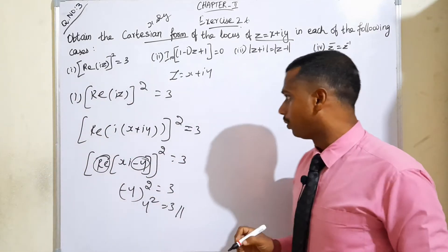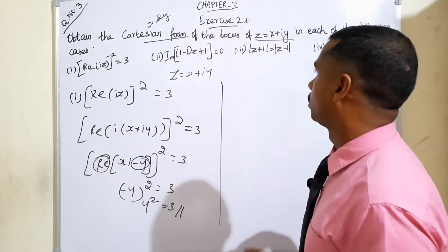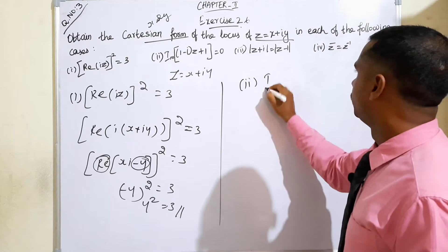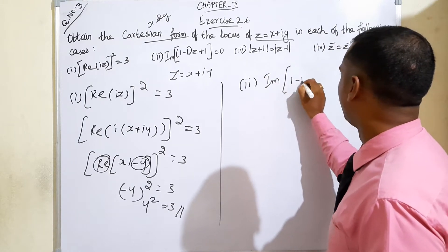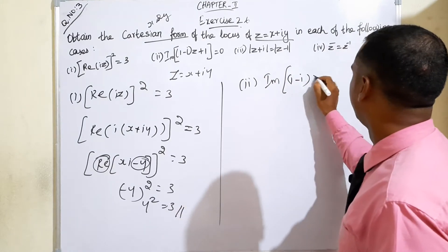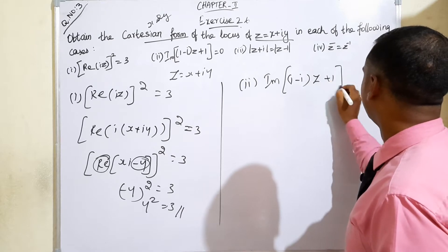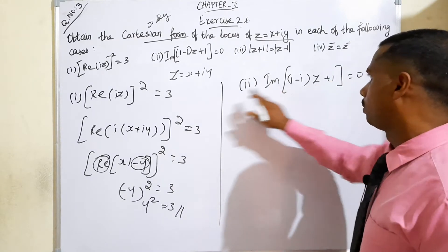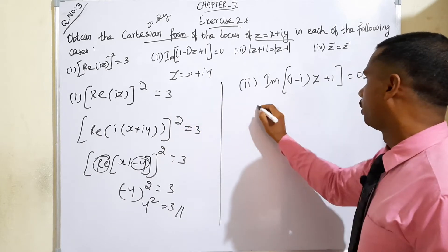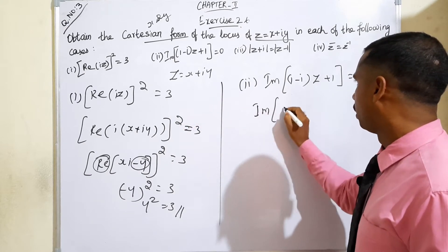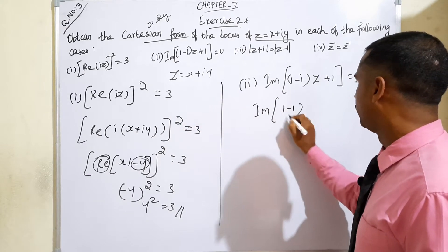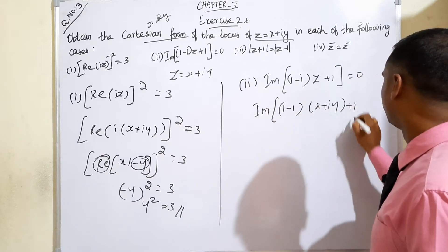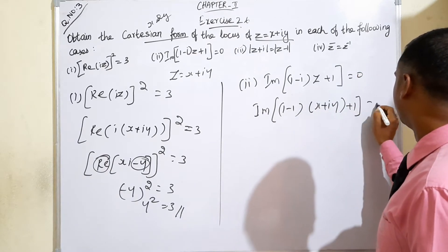Moving to subdivision 2. The question is: the imaginary part of (1 minus i)(z + 1) is equal to 0. Again, we apply z equals x plus iy. So, imaginary part of (1 minus i)(x + iy + 1) is equal to 0.